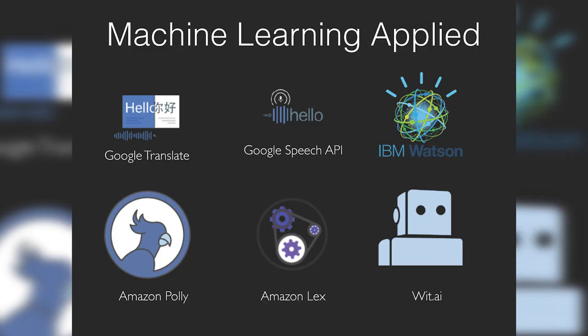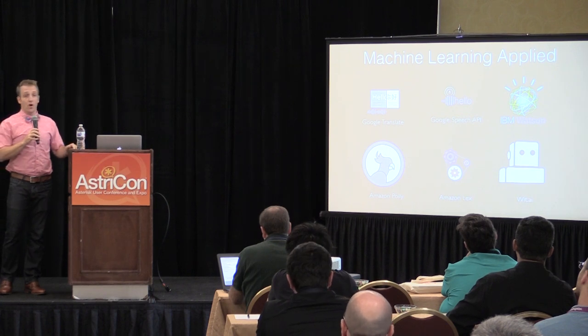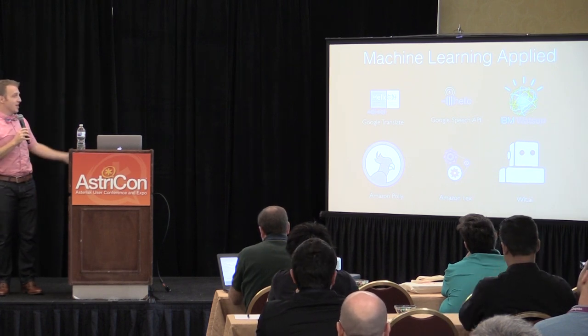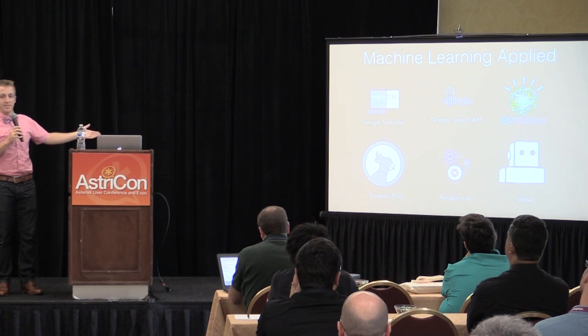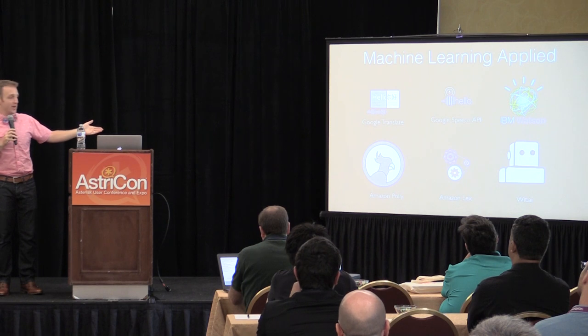These projects are not just theoretical — they're applied right now with businesses making a lot of money. Google Translate uses TensorFlow to run its translation. Google Speech, IBM Watson — same sort of thing. Polly is Amazon's artificial speech generation tool. Lex is their chatbot interface.